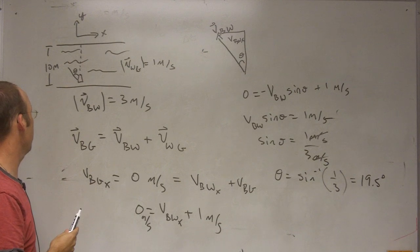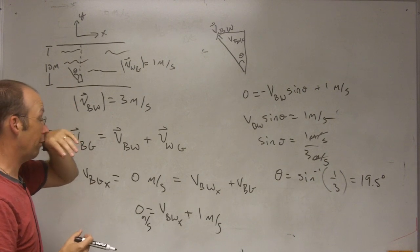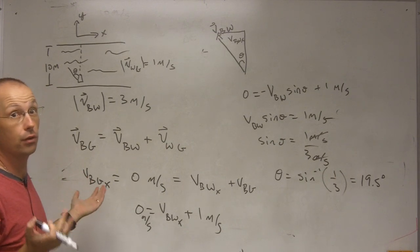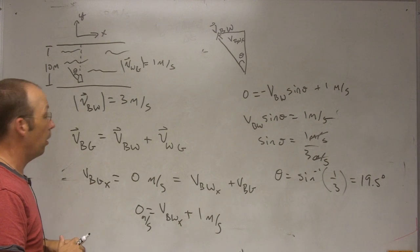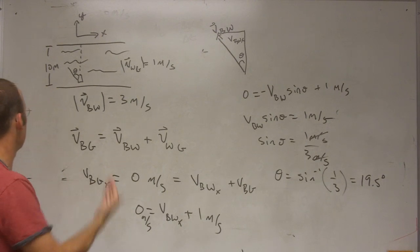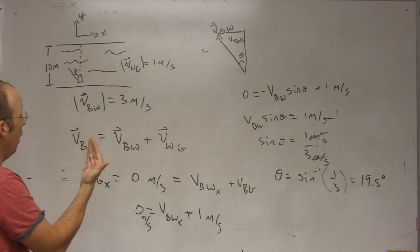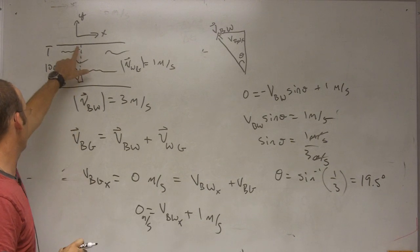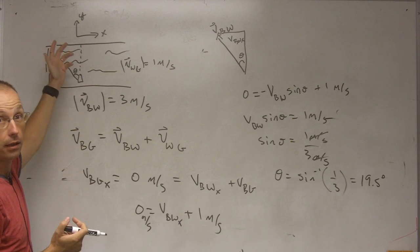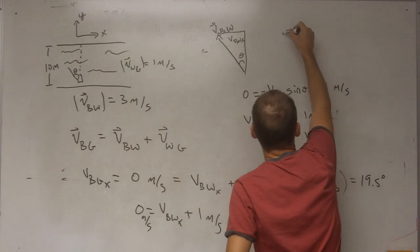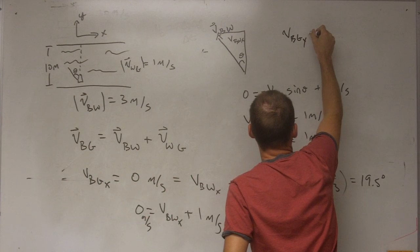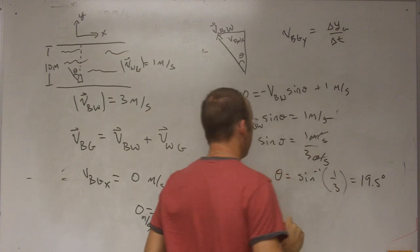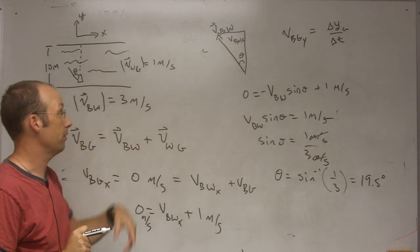So you have to aim 19.5 degrees to the left in order to go straight across. Another common extended part to this problem is: how long does it take you to get across? If I look at the velocity of the boat with respect to the ground in the y direction, I know the distance in the y direction, so I can find the time.